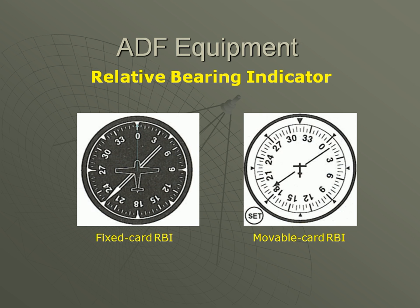There are several different kinds of ADF instruments in the cockpit. One type is the relative bearing indicator, or RBI, and there are two types of RBI: fixed card and movable card. Their appearance and operation are similar, the biggest difference being that a fixed card RBI gives us no heading information. It's numbered starting with zero on top, and in degrees clockwise from the nose. A movable card RBI moves automatically with a DG, or is set manually with a knob, to show the present heading at the top.